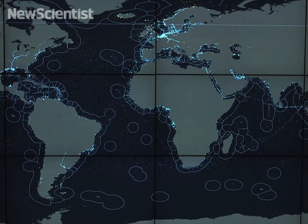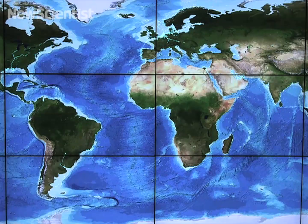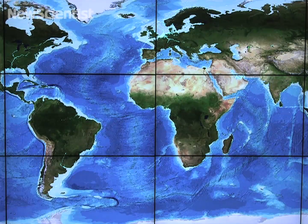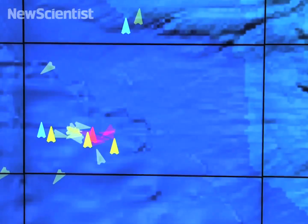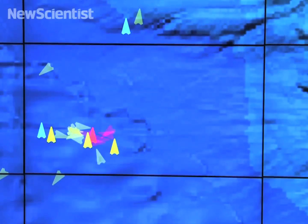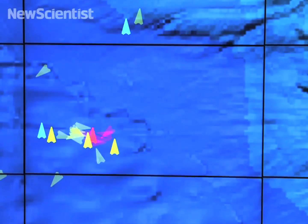We can also show the topography of the ocean floor, which indicates the presence of seamounts and similar features. An experienced fisheries analyst can estimate the types of fish in such an area and cross-reference with the fishing licences the vessel holds.